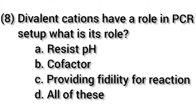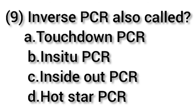The eighth question: divalent cations have a role in PCR setup — what is their role? Option A it can resist pH, option B act as cofactor, option C providing fidelity for the reaction, and option D all of these. The correct answer is option B — they act as cofactors.